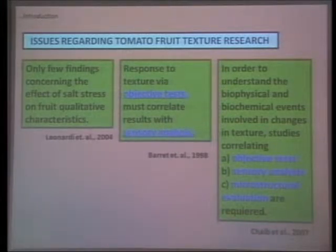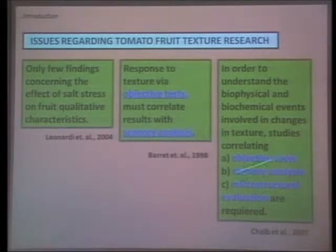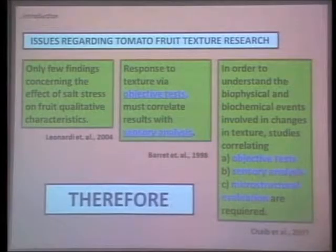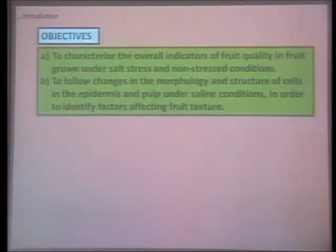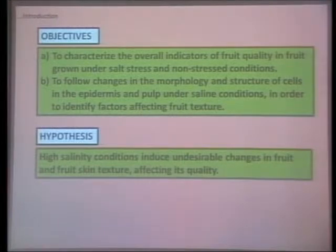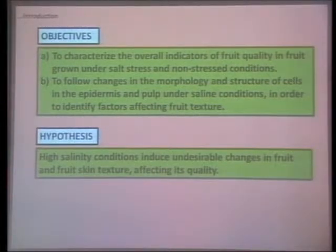The literature suggests the best study would combine objective tests, sensory analysis, and microstructure evaluation of cells in the fruit. Therefore, the objective of our research is to characterize overall indicators of fruit quality, follow changes in morphology and structure of cells, and see if these affect fruit texture — all under the hypothesis that salinity induces undesirable changes in fruit and fruit skin, affecting its quality.